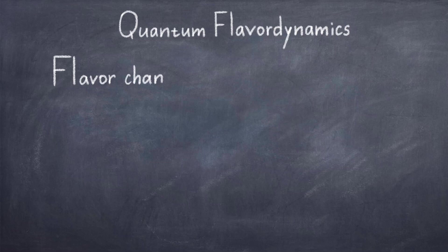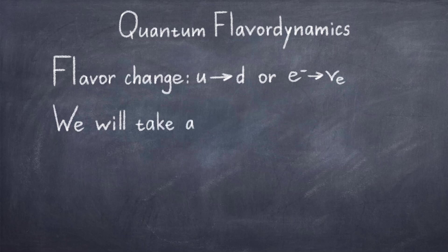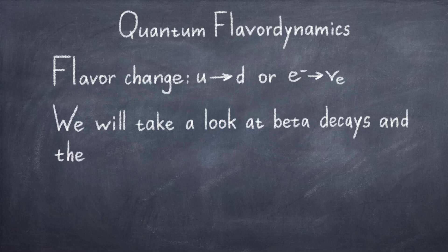What we mean about changing flavor is changing the identity of a particle. Two examples of flavor change is when an up quark is changed to a down quark, and when an electron is changed into a neutrino. It is of course not possible to change these particles arbitrarily, as baryon number, charge and color must be conserved, so there are some rules this force must abide to.